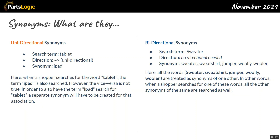A good use case would be 'Chevy' as a synonym for 'Chevrolet.' The other flavor is bidirectional synonyms, which is really powerful. In this example, 'sweater,' 'sweatshirt,' 'jumper,' 'woolly,' 'woolen' — all the words are treated as synonyms of one another. When a shopper searches for one of these words, all the other synonyms are searched as well. That's what synonyms are: unidirectional and bidirectional.